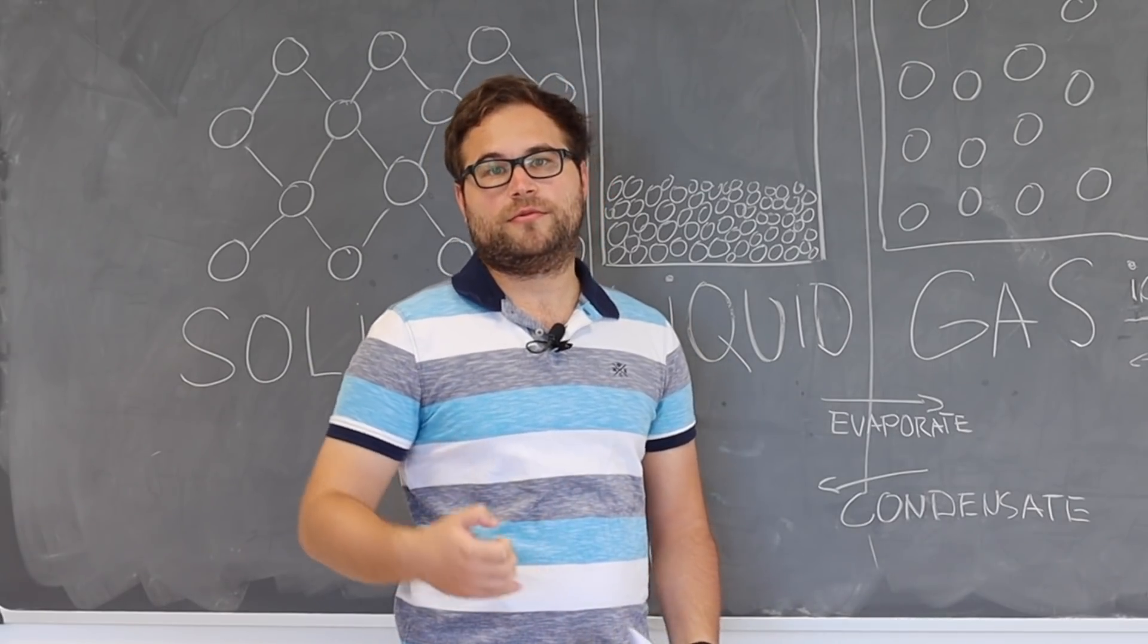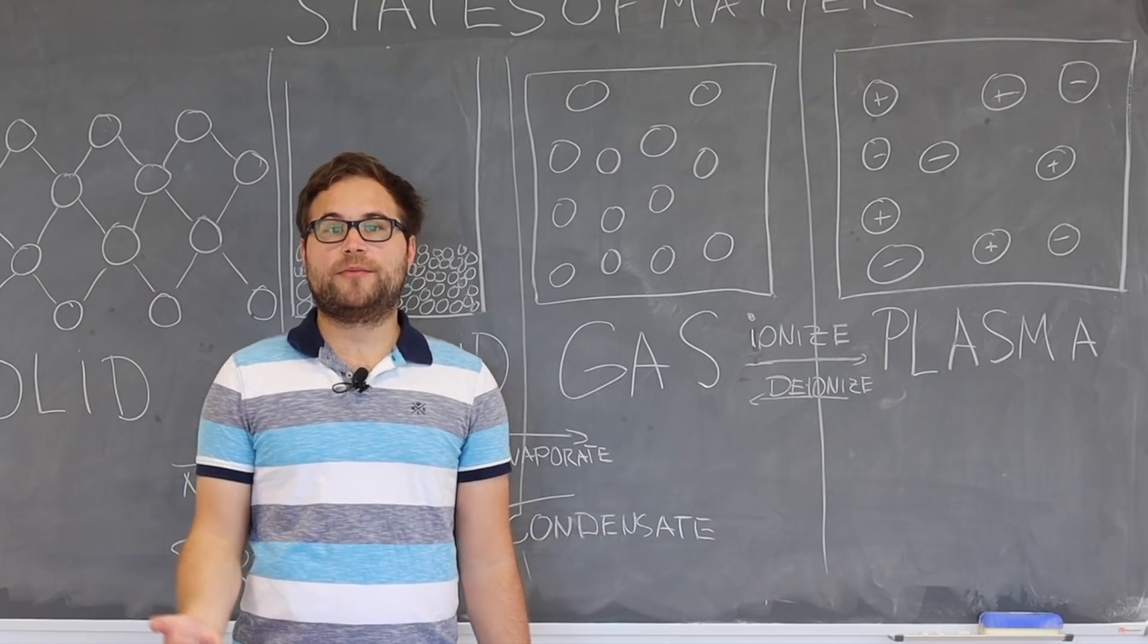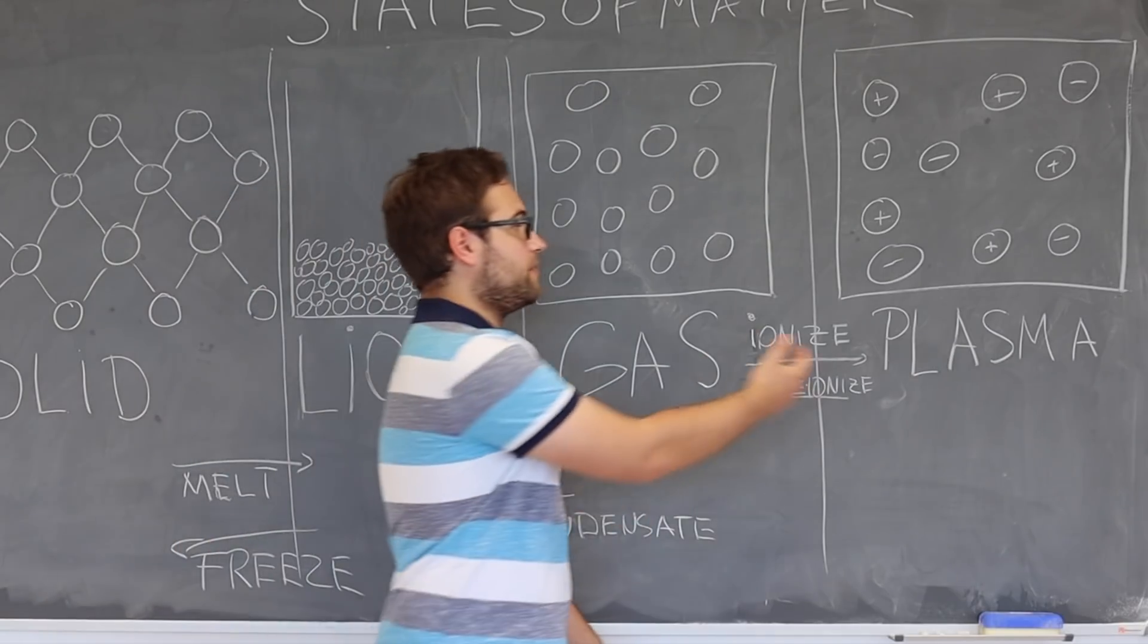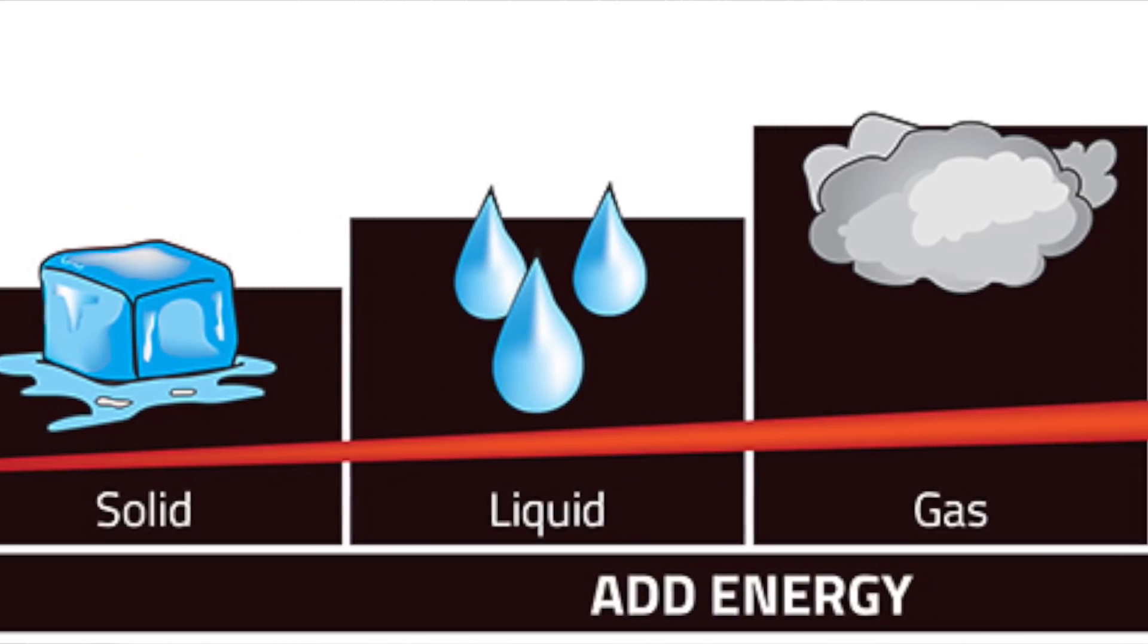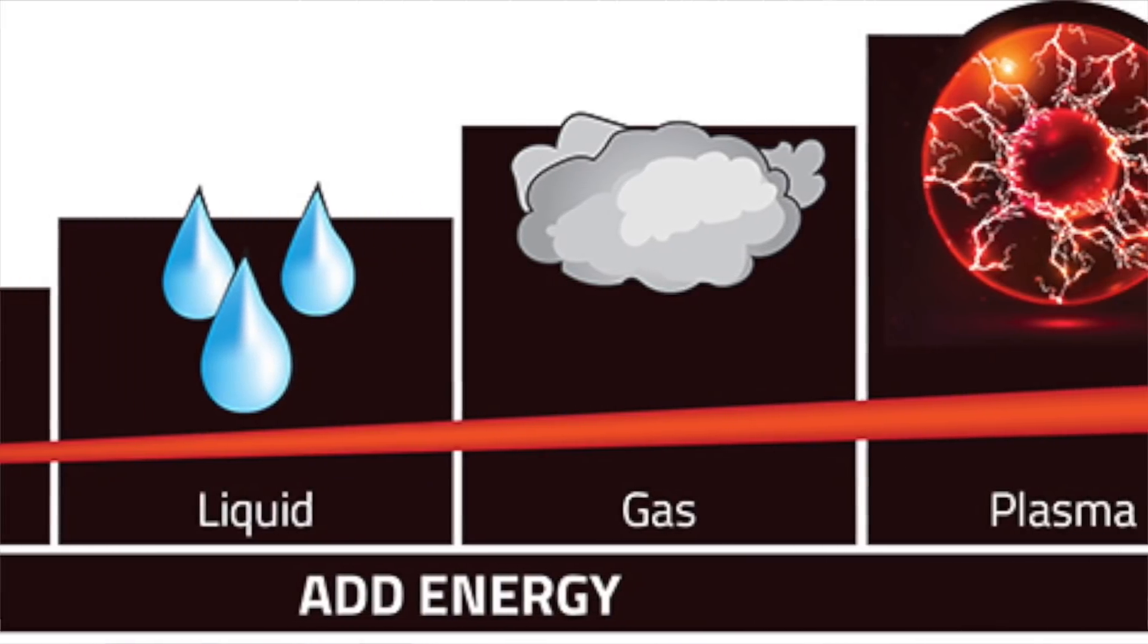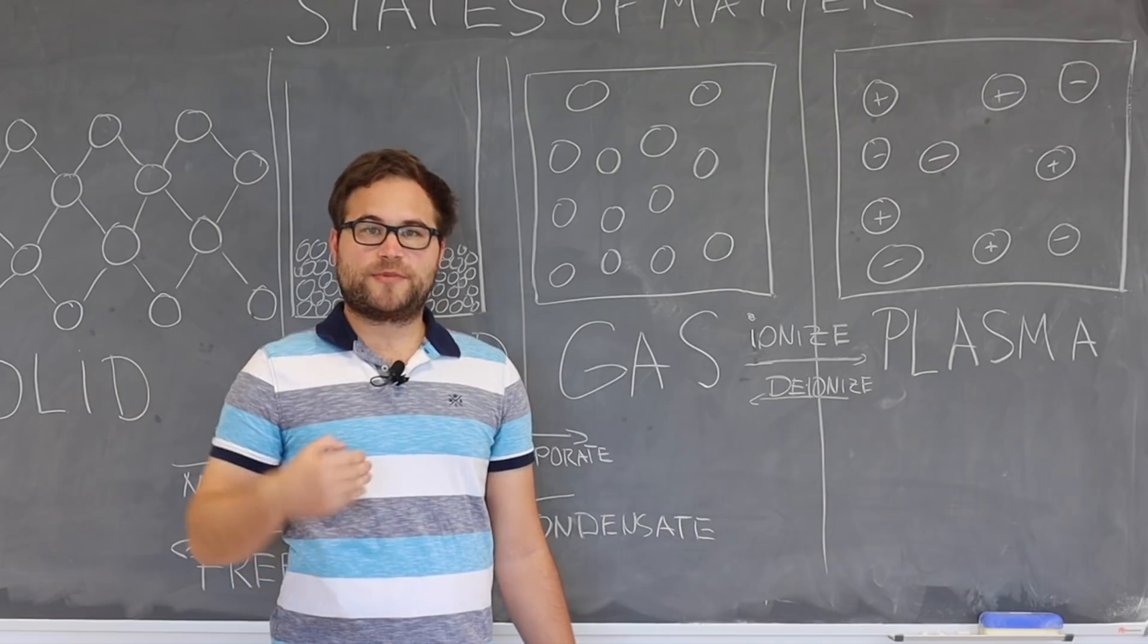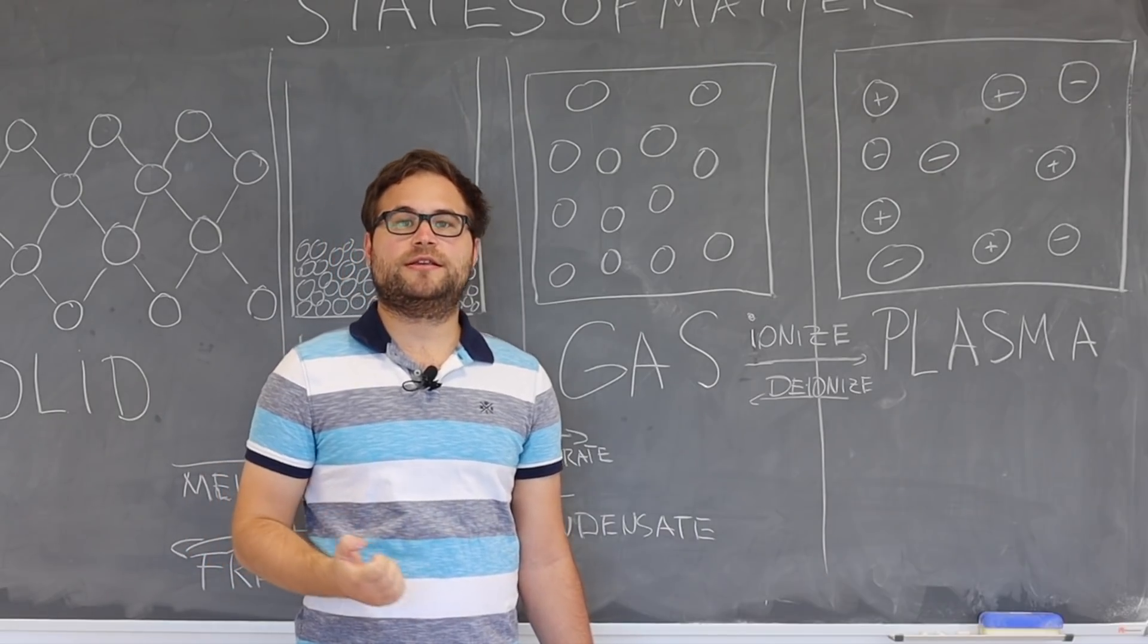The fourth state of matter which might not come to mind immediately is the plasma. In the same way if you heat a liquid it will evaporate and form a gas, you can heat up a gas and it might form a plasma. The plasma state is so hot that the electrons are ripped away from the ions.